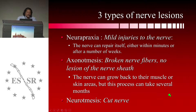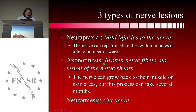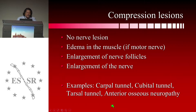There are three types of nerve lesions, and they have Greek names. The first one is neuropraxia — it is a mild injury of the nerve, and the nerve can repair itself either within minutes or after a number of weeks. The second is axonotmesis: broken nerve fibers but no lesion of the nerve sheath; the nerve can grow back to the muscle or skin areas, but this process can take several months. The third is neurotmesis, which is a cut nerve that never comes back to normal after the wound.